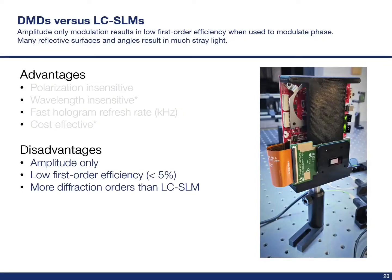There are some significant disadvantages of DMDs though. The first is that they are amplitude-only devices and cannot modulate the phase of light on a pixel-by-pixel basis like a liquid crystal SLM. This doesn't prevent us from using a DMD to do this though. Unfortunately, the compromise is that when DMDs are used to modulate the phase of a laser beam, they are very inefficient, with a maximum of about 5% of the light ending up in the first order. Lastly, because a DMD is made up of many reflective surfaces, there can be many more diffraction spots than with a liquid crystal SLM, making experimental setup arrangements slightly more challenging.